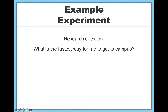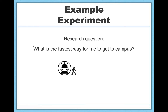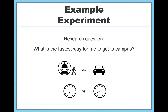Here's an example: commuting to campus. What's the fastest way to get to campus? I can address this with an analysis of variance because I have to make a few decisions. One decision is what mode of transportation to use — I can take the light rail and walk the rest of the way, or I can drive the whole way. Another decision is when I leave: either at 6:30 a.m. or at 8 a.m. So I have two big decisions to make.